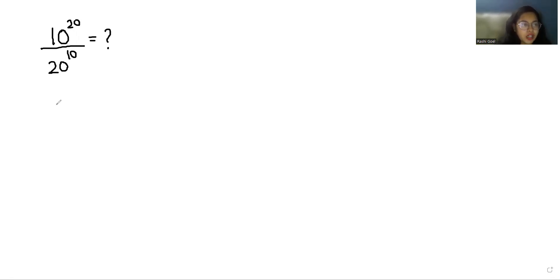So 10 power 20 we can write it as 10 power 10 plus 10 by 20 power 10. Now using the exponent rule x power m plus n equals x power m times x power n, we get 10 power 10 times 10 power 10 by 20, which we can write as 2 times 10 power 10.